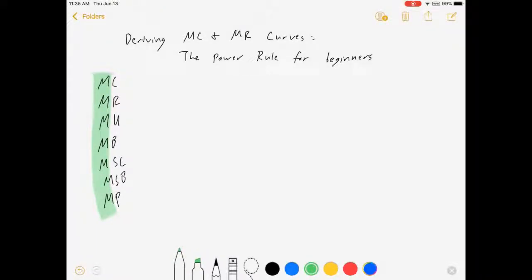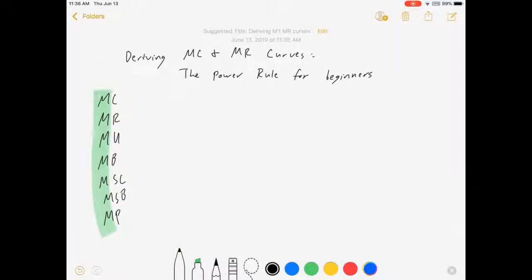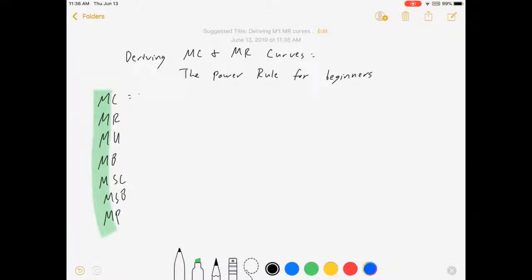I want to talk in this video about where those come from. That word marginal means change in total cost over change in quantity, or change in total revenue over change in quantity, or change in utility over change in quantity, and so on. They're all kind of the same idea. They're referring to how fast something is changing. These are approximations of slopes.